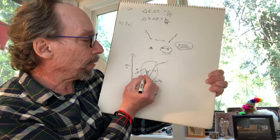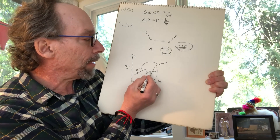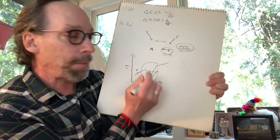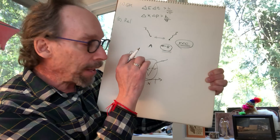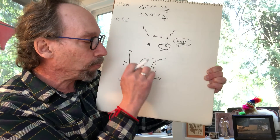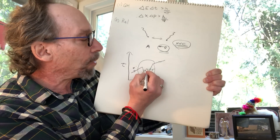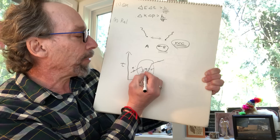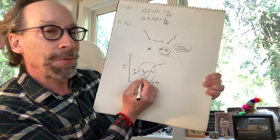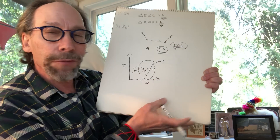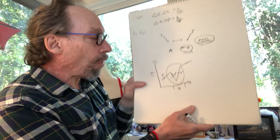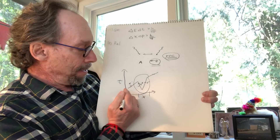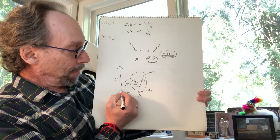Let's think about what happens when an electron is moving backwards in time. A negative electric charge moving backwards in time is equivalent to a positive electric charge moving forward in time if we follow the flow of charge. So let's think about what that would look like on different time slices.